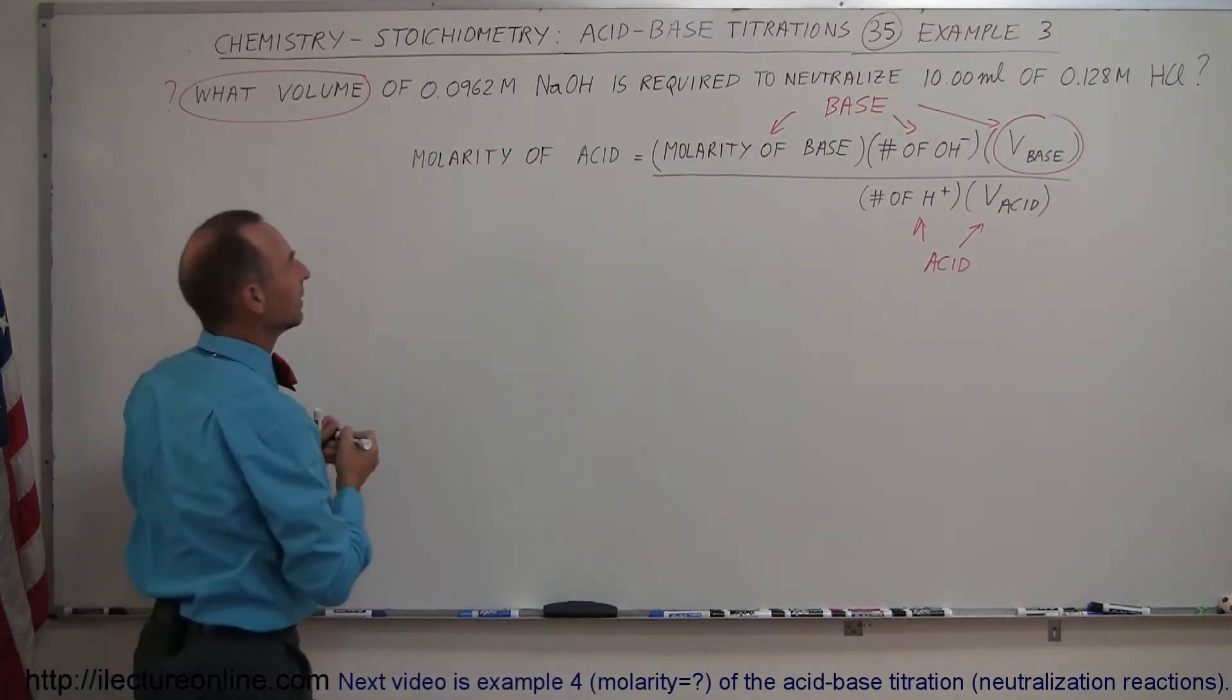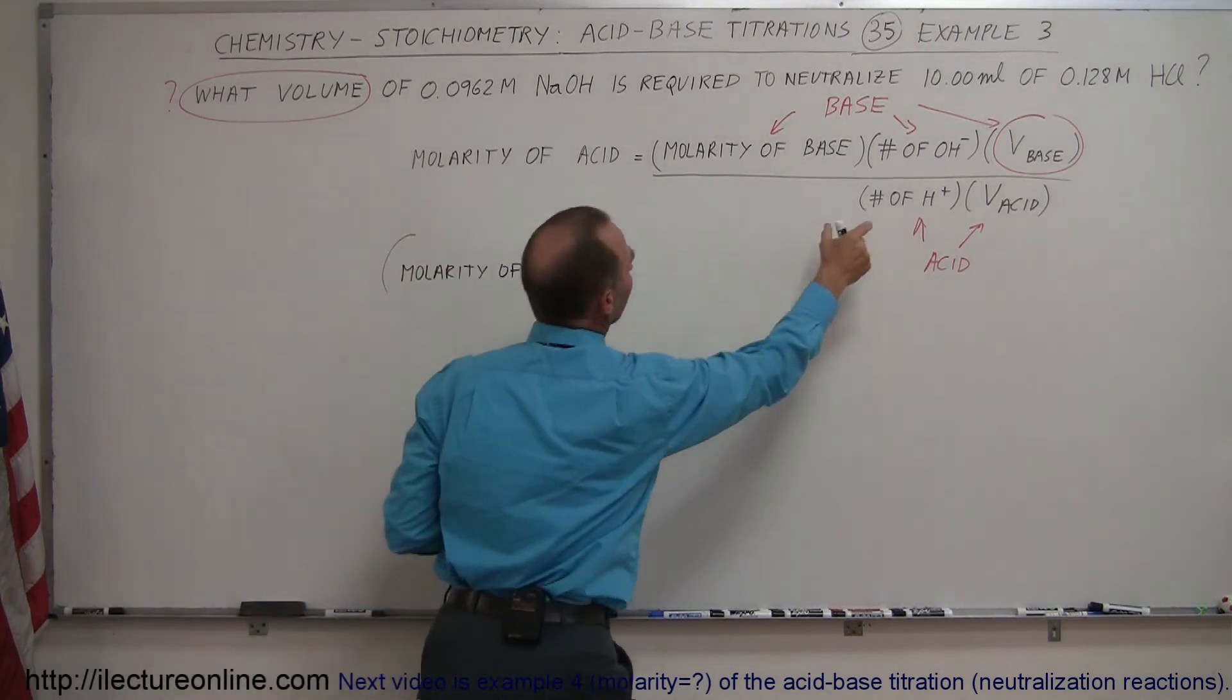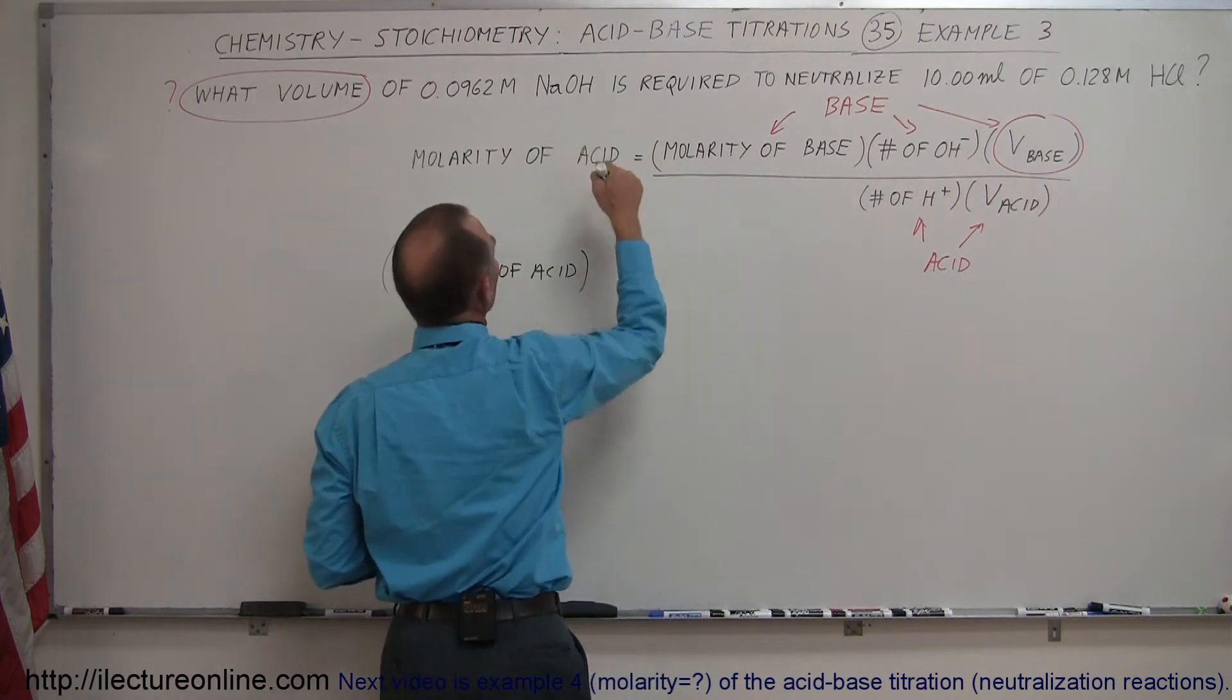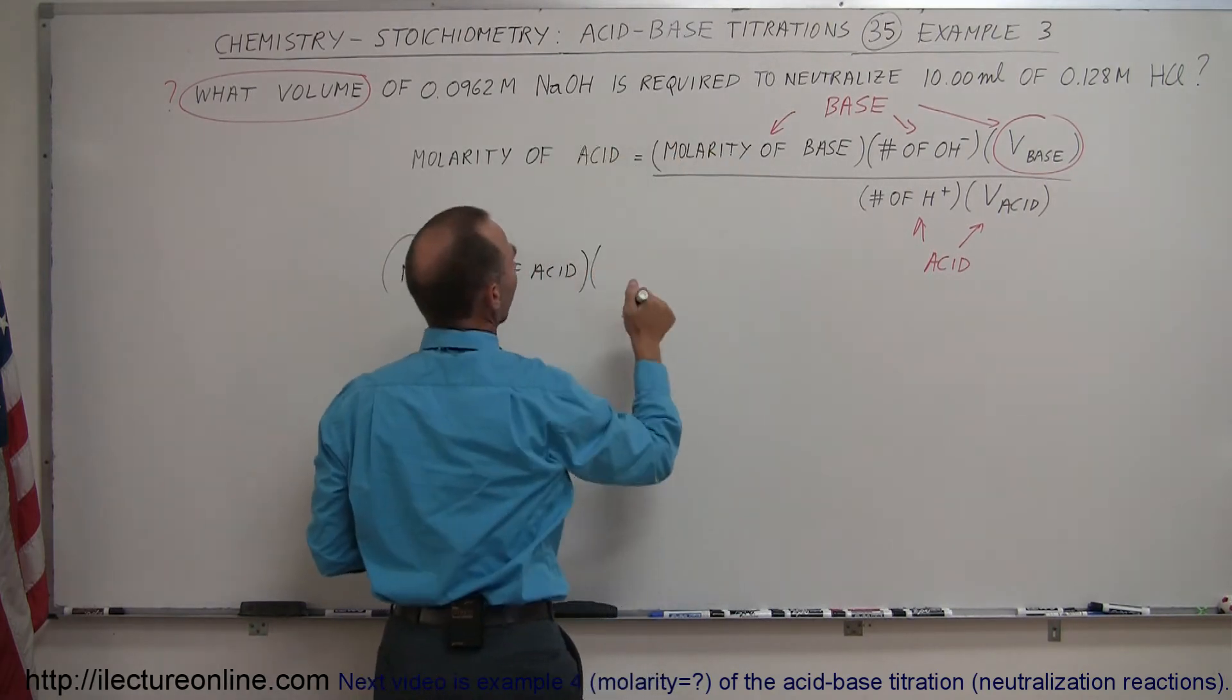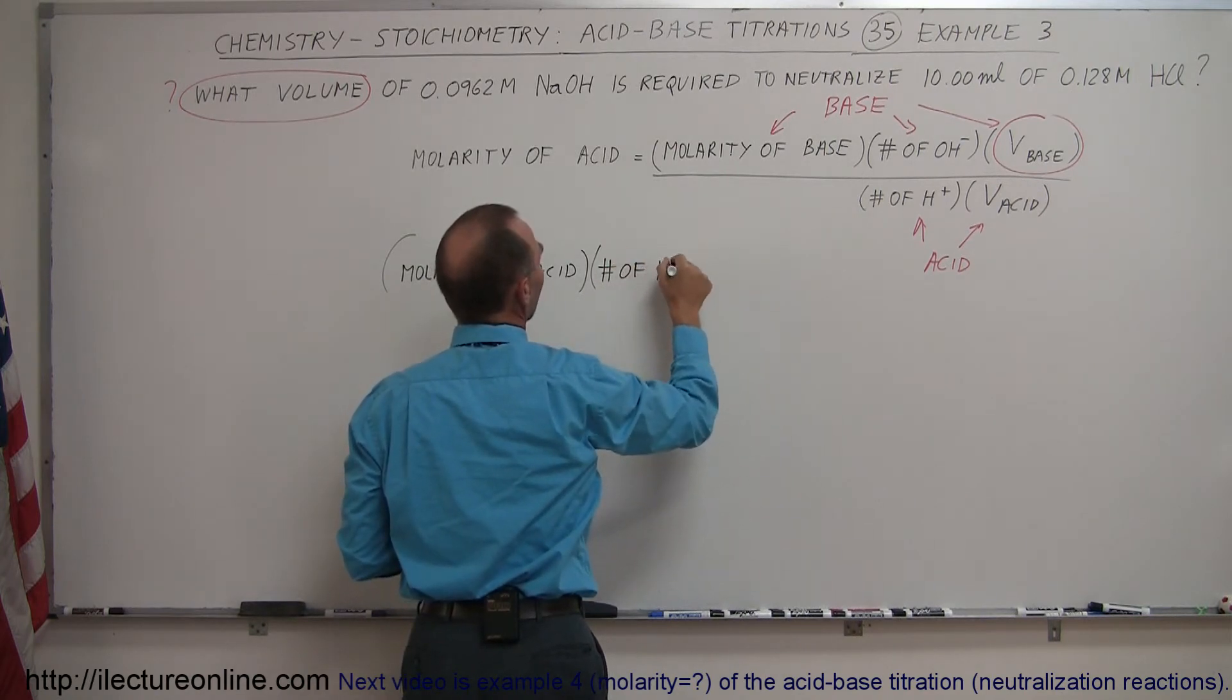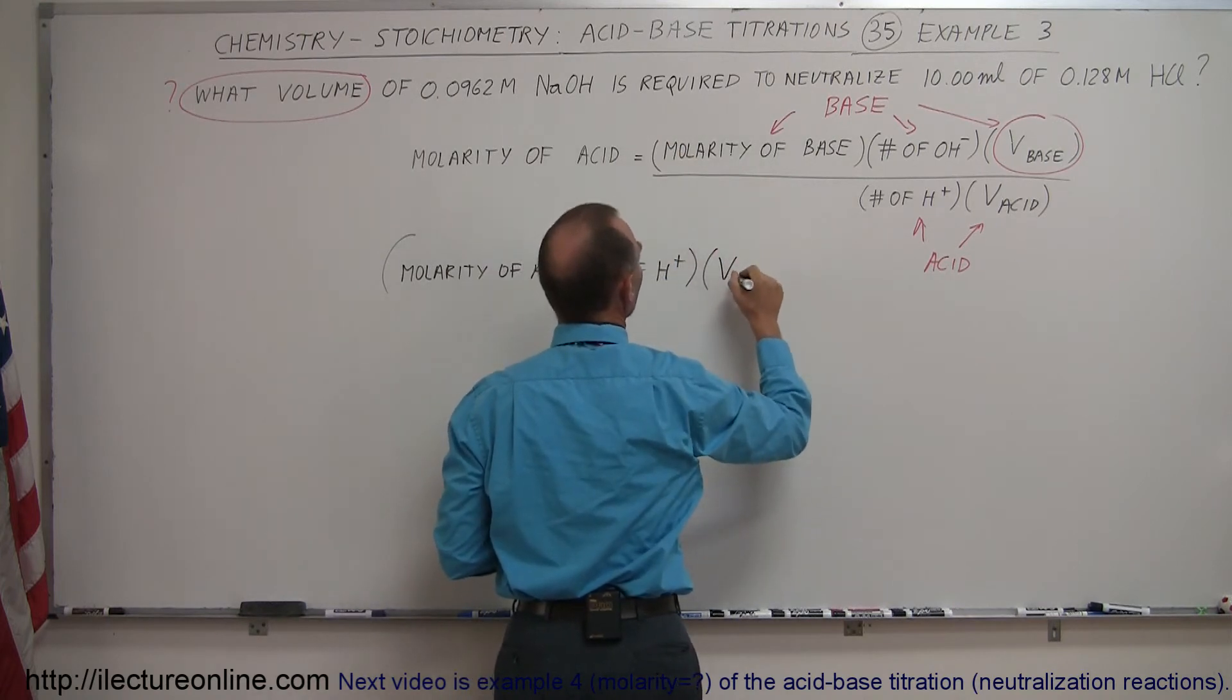So we have the molarity of the acid. Now we're going to take this and move it across to this side of the equation. If we divide on the right side, that means we multiply on the left side. So the number of hydrogen ions times the volume of the acid goes up here.